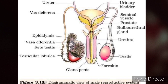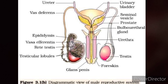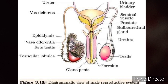The male sex accessory ducts help indirectly in reproduction. They include the rete testis, vasa efferentia, epididymis, and vas deferens. The seminiferous tubules of the testes open into the vasa efferentia through the rete testis. The vasa efferentia leave the testes and open into the epididymis, located along the posterior surface of each testis, as seen in the diagram. The epididymis is the coiled structure visible in the diagram.